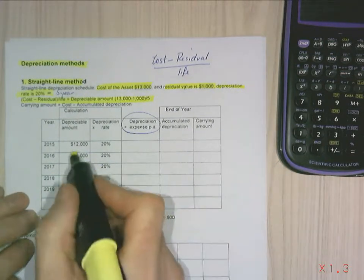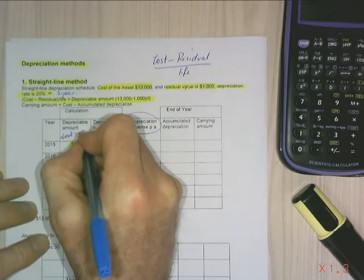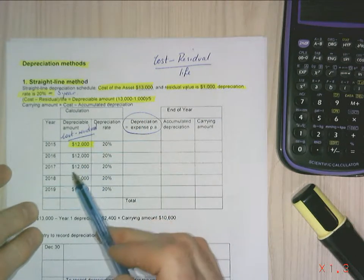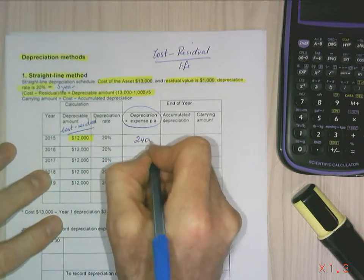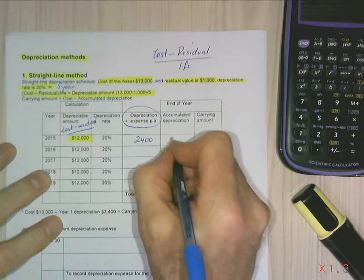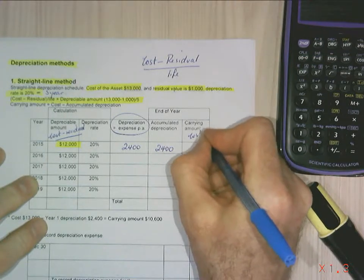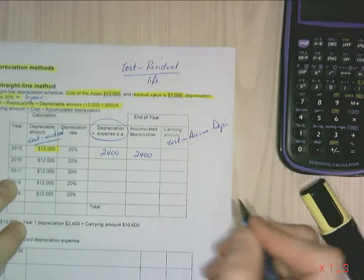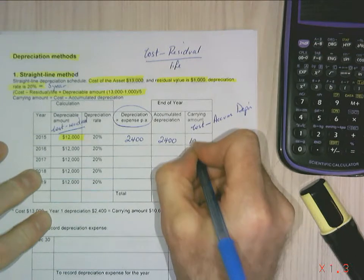So let's do that. My depreciable amount is $12,000 being my cost minus the residual. The $13,000 less the $1,000 gives me my depreciable value. My first calculation is 20% of that, which is $2,400. My accumulated depreciation is just the sum of all my depreciations. We've only got one in the first year, so we've got $2,400. And my carrying amount is my cost minus my accumulated depreciation. So my cost is $13,000 less my accumulated depreciation of $2,400 comes in at $10,600.